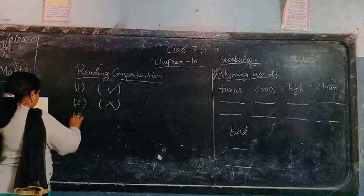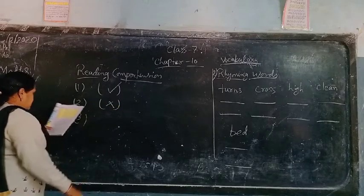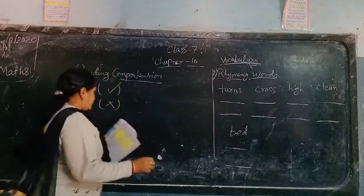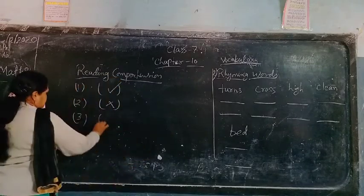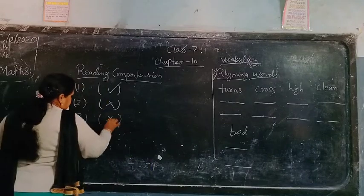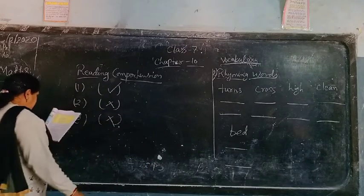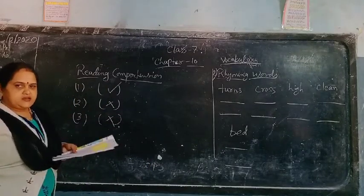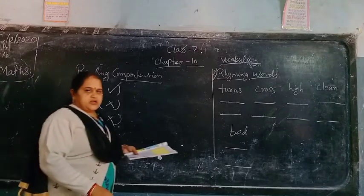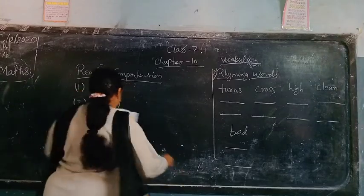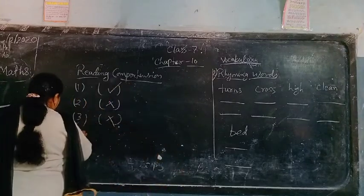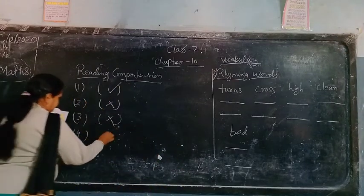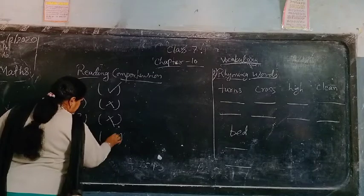Then the third one: 'The river is straight.' Kya nadi seedhi kaati hai? Wrong — nadi seedhi nahi kaati hai. Then: 'The river is dirty.' Kya river, jo nadi ka paani, thandha hai? Wrong. Fourth one — also wrong.